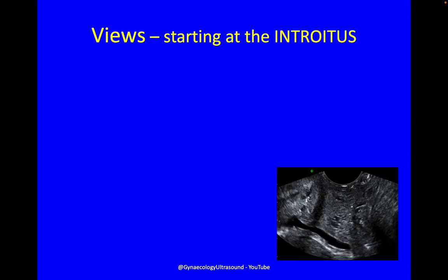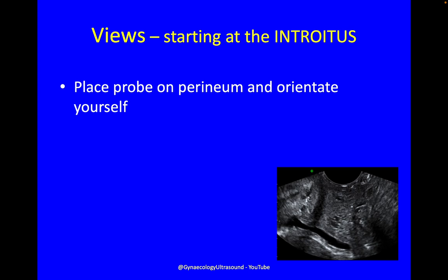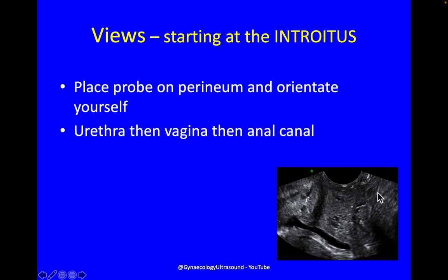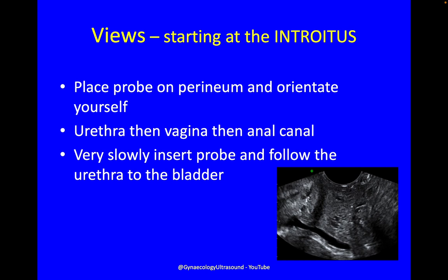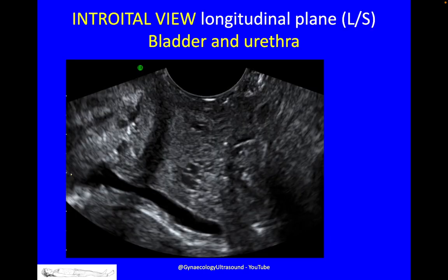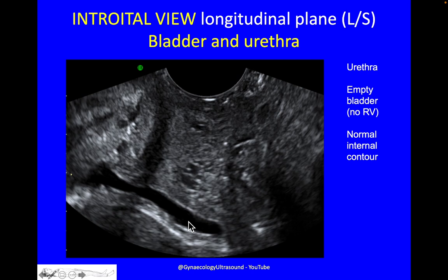If you start by just placing your probe on the introitus — a transvaginal probe placed on the perineum — you orientate yourself and see the urethra, vagina, and anal canal. Then very, very slowly insert the transvaginal probe and follow the urethra to the bladder, saying to the patient, let your knees go floppy. You might see transvaginal tape here, or diverticulae. You can look at the urethra and the bladder to see how well it's emptied, if there's a post-void residual.